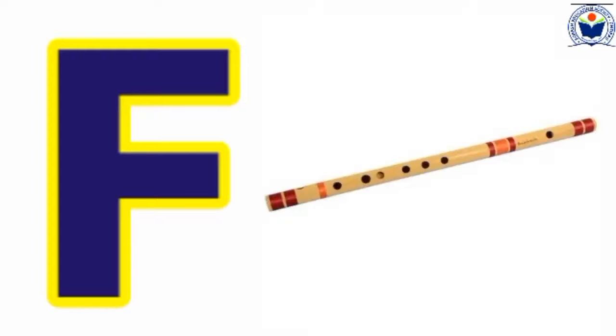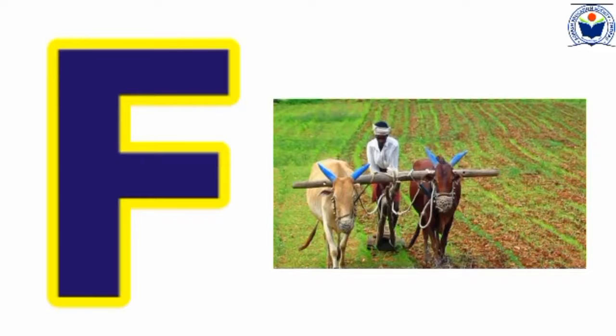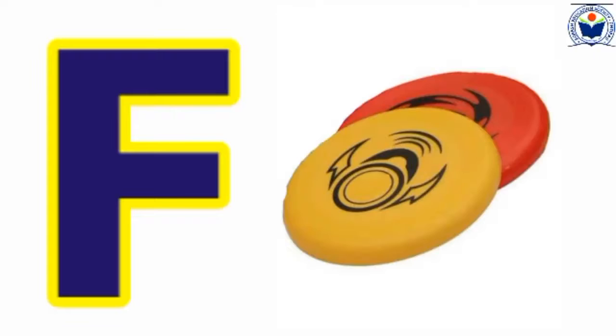F — F for flute. This picture is flute. F — F for folk. This picture is folk. F — F for farmer. This picture is farmer. F — F for forehead. This picture is forehead. F — F for frisbee. This picture is frisbee. F — F for five. This picture is five. F — F for four. This picture is four.